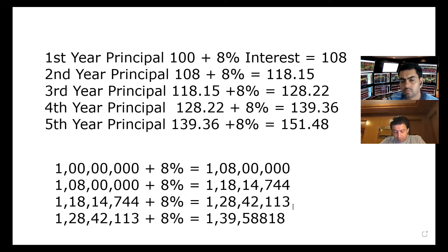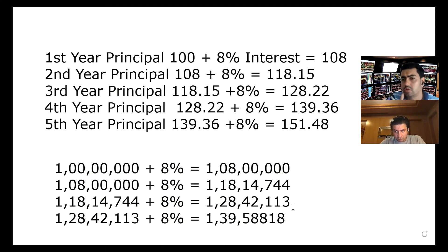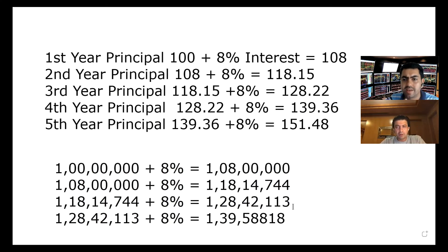Previously we discussed compounded growth upon interest. Don't get confused — the Rule of 72 is different. The Rule of 72 will tell you in how many years your money will double.